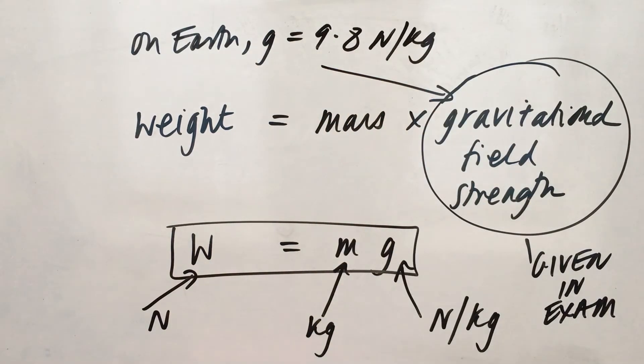The equation basically shows that the weight of an object depends on gravity because mass never changes. So the weaker the gravity is, the smaller the weight of the object.